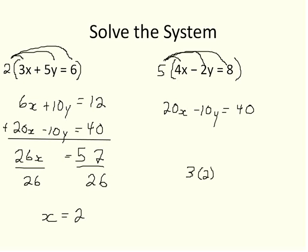3 times 2 plus 5y is equal to 6. 3 times 2 is 6. 6 plus 5y equals 6. I'll subtract 6 from both sides of this equation, leaving me with 5y is equal to 0. Divide both sides by 5, and my y value is equal to 0.